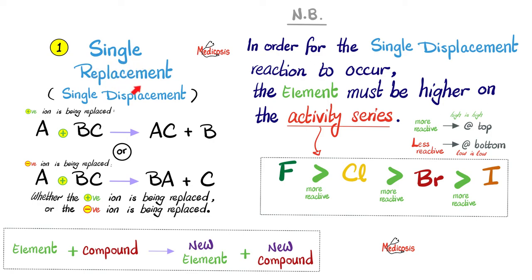Be careful. For this single replacement or single displacement reaction to take place, the element, this doofus right here, must be higher on the activity series. What the flip is the activity series? It's like a table trying to organize atoms by their reactivity. For example, if you look upstairs in the activity series, on top we have more reactive stuff. At the bottom we have less reactive. Mnemonic: less reactive is lower in position. Or you just say high is high and low is low. And according to the activity series, fluorine is more reactive than chlorine. And chlorine is more reactive than bromine. And bromine is more reactive than iodine. Which means fluorine can replace iodine in a single replacement or single displacement reaction.